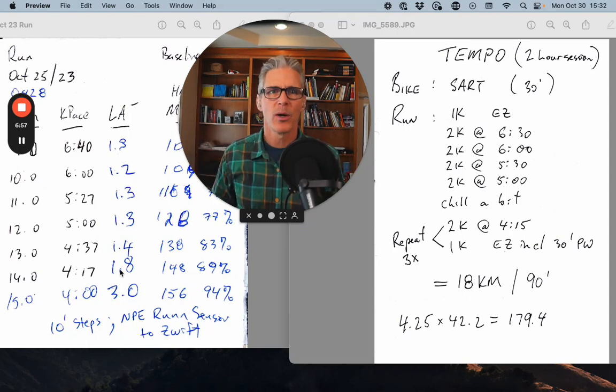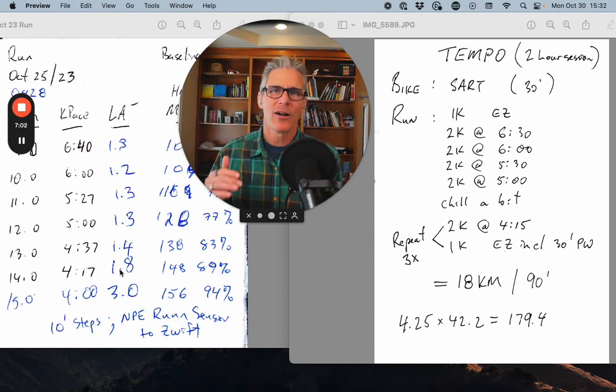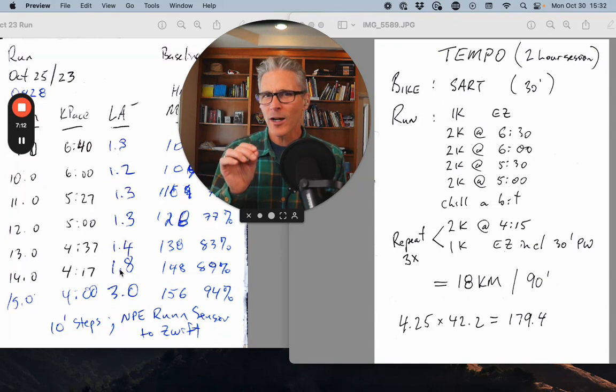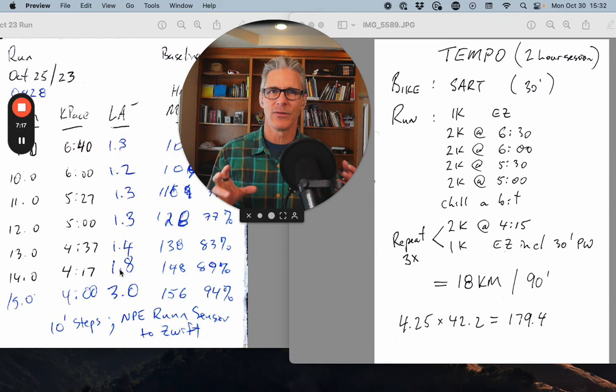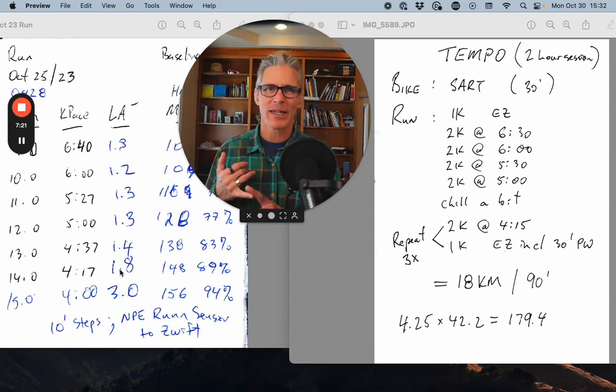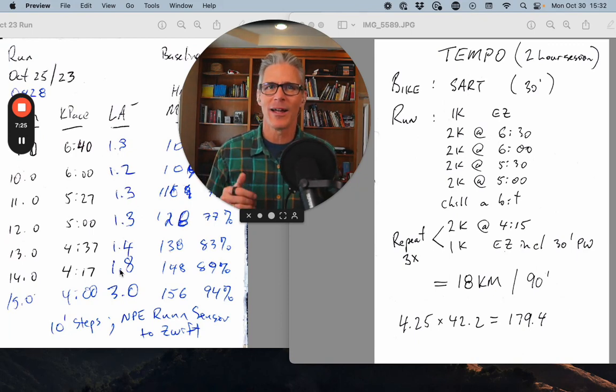So the set is simple. 2K tempo, 1K easy. And by easy, I'm probably going to back off, back down into that zone one pace. I'm going to put a 30-second walking break at the start of each of those Ks because I find that walk breaks give me faster recovery and they also change the muscle activation.